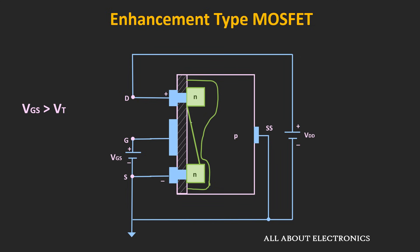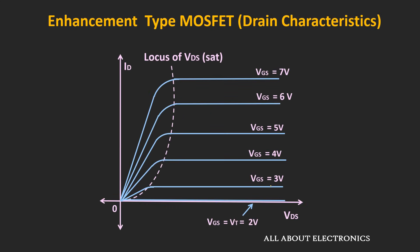For a fixed value of Vgs, if we further increase Vds, the difference between the gate and drain terminal falls below the threshold voltage, so the channel will not form towards the drain terminal. It might appear that the current should become zero, but the current Id actually remains and gets saturated, because electrons passing through the channel can still cross the depletion layer due to the electric force. Once pinch-off occurs, current Id is saturated and remains almost constant even as Vds increases.